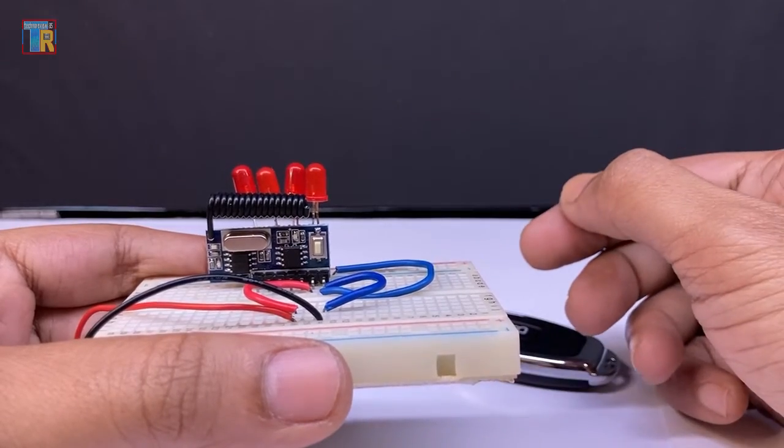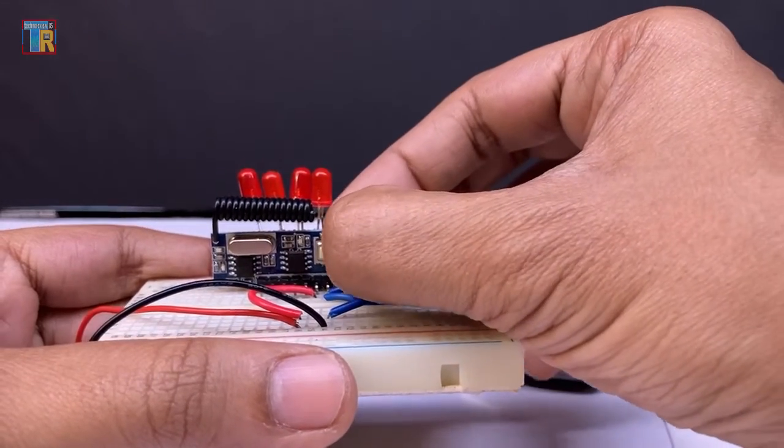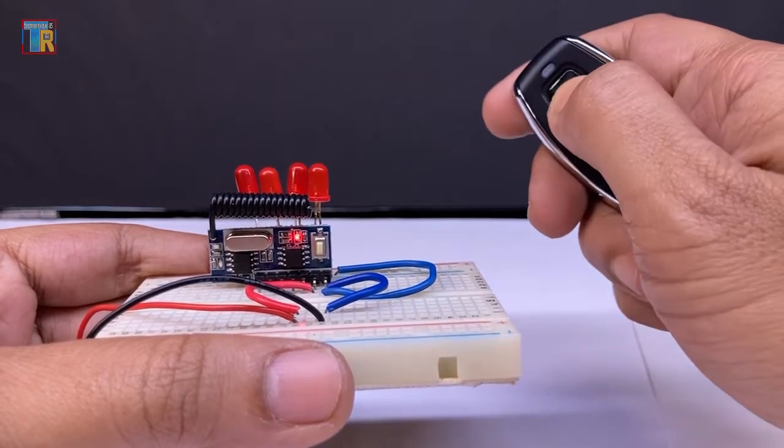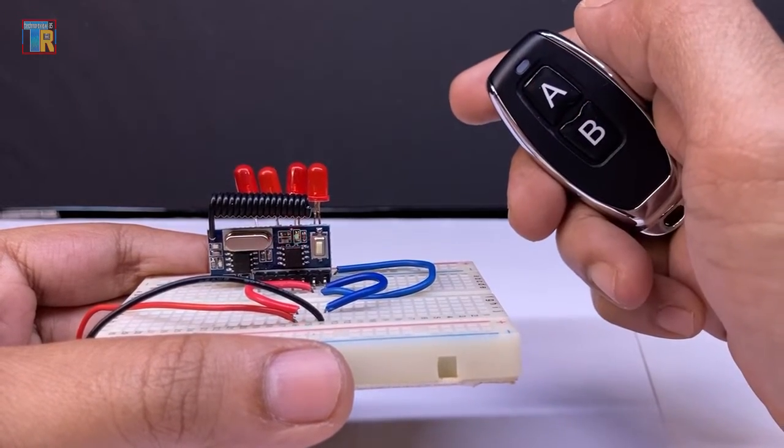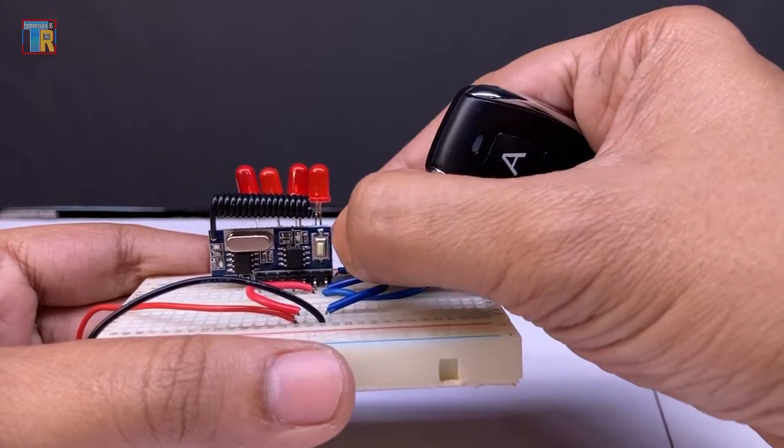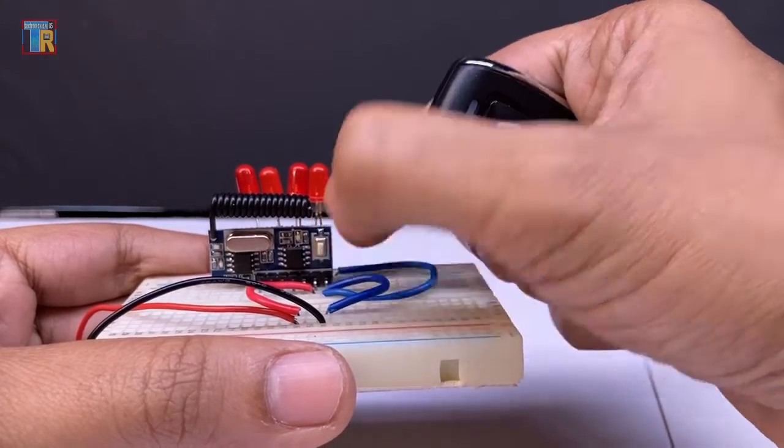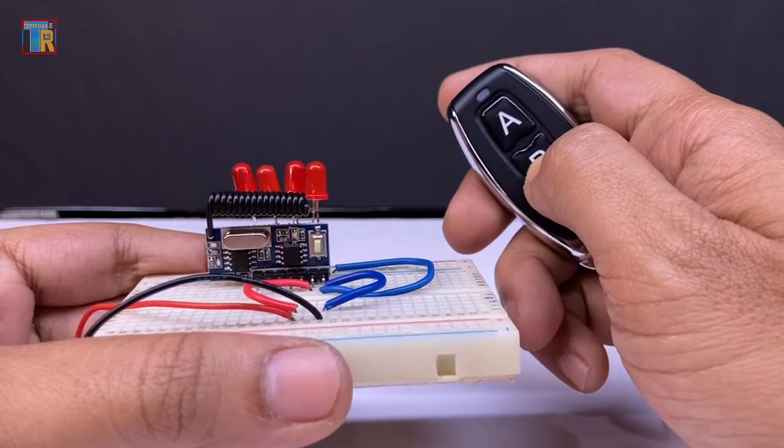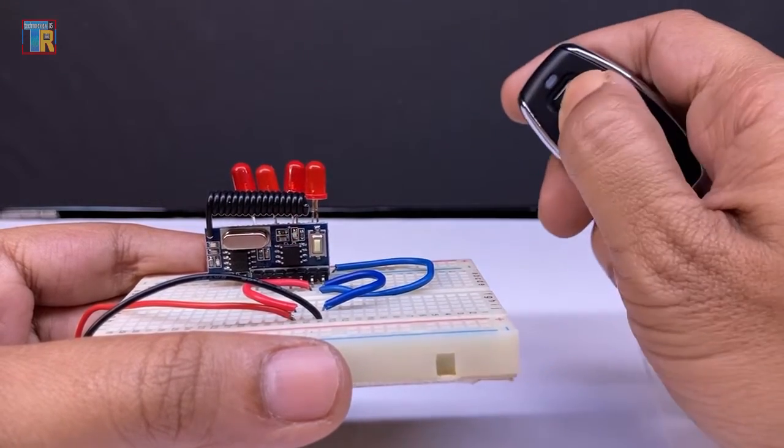Now I will show you toggle mode. Pressing the learning button twice to enter toggle mode. Now pressing the A button, repeating the same with button B. Now I can turn on and off with a single button on the remote.